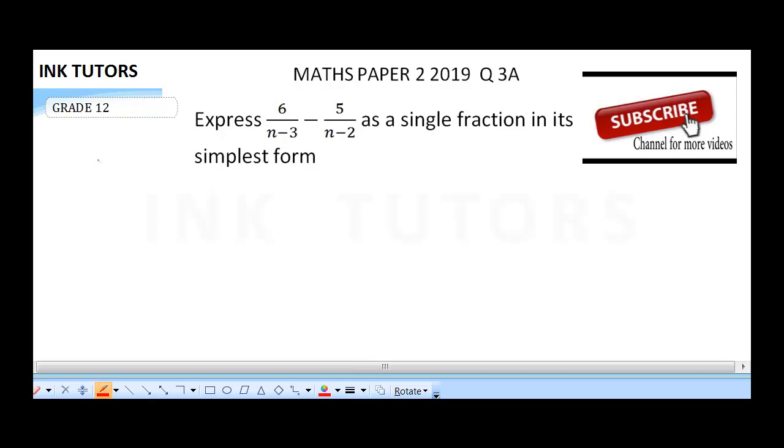One of the things we need to do is make sure this can be represented as a over b, which is a single fraction. The first thing we need to do is take the LCM of both denominators. So that's n minus 3 multiplied by n minus 2.